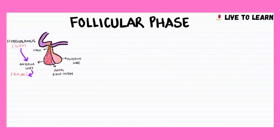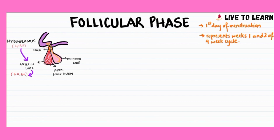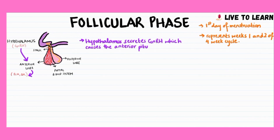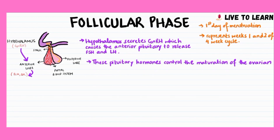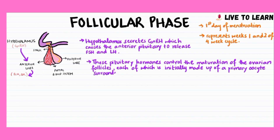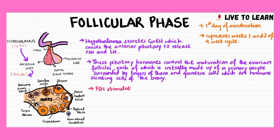The pre-ovulatory period or follicular phase starts at the first day of menstruation and represents weeks 1 and 2 of the 4-week cycle. The hypothalamus secretes GnRH, which causes the anterior pituitary to release FSH and LH. These pituitary hormones control the maturation of the ovarian follicles, each of which is made up of a primary oocyte surrounded by layers of theca and granulosa cells, which are hormone-secreting cells of the ovary.